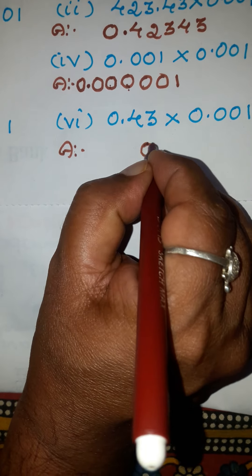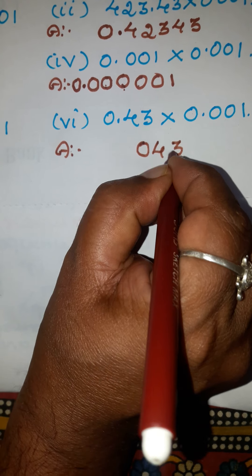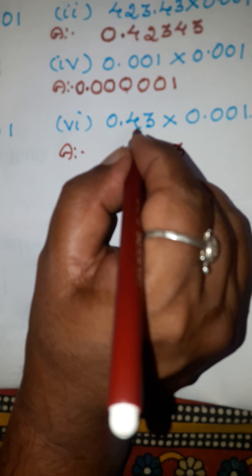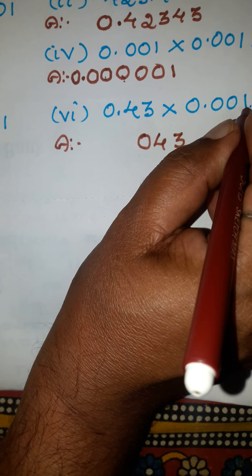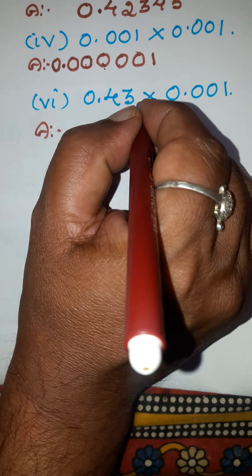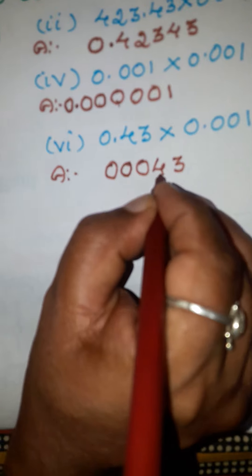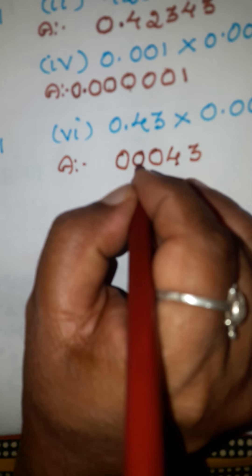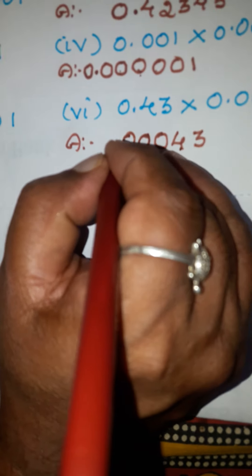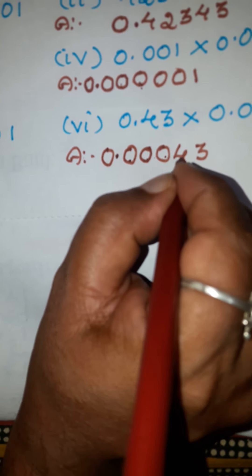Here we have 0.43. Ignoring the decimal, write this as 043. After the decimal there are two places; here after the decimal point there are three places. Three plus two equals five, so you have to move five places. Insert two zeros here, then move — one, two, three, four, five — put the decimal point and a zero here. The answer is 0.00043.